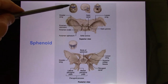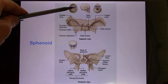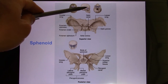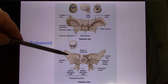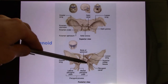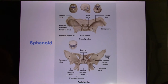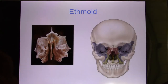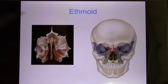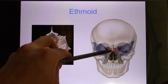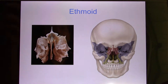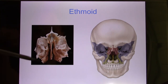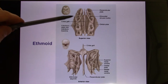The sphenoid sits in the bottom part of your cranium. From the lateral view, you only see a small wing — the greater wing — and the central portion is called the body. The ethmoid bone, from the outside, you see very little. It's in the upper part of your nasal cavity and has a lot of folding.